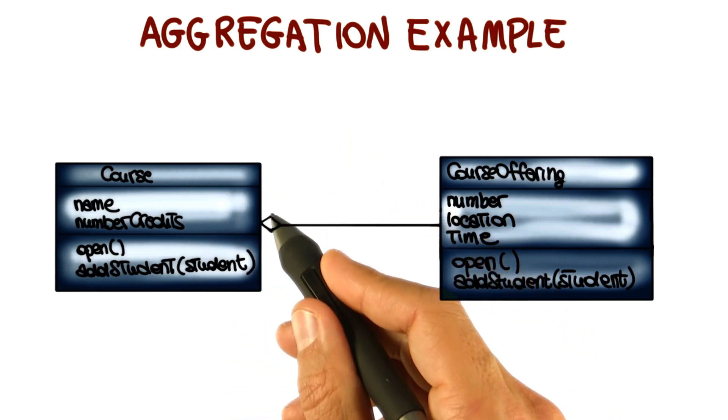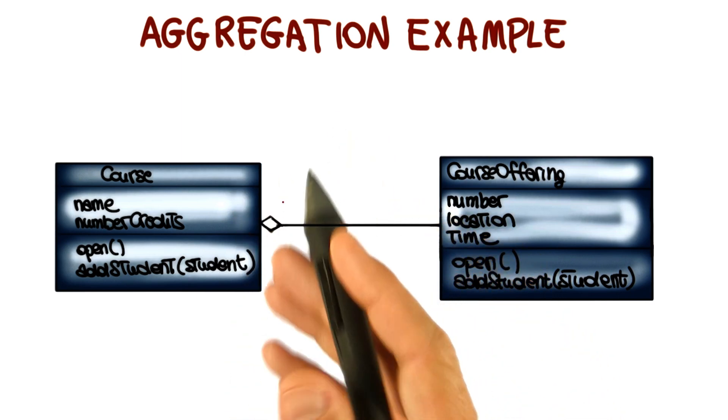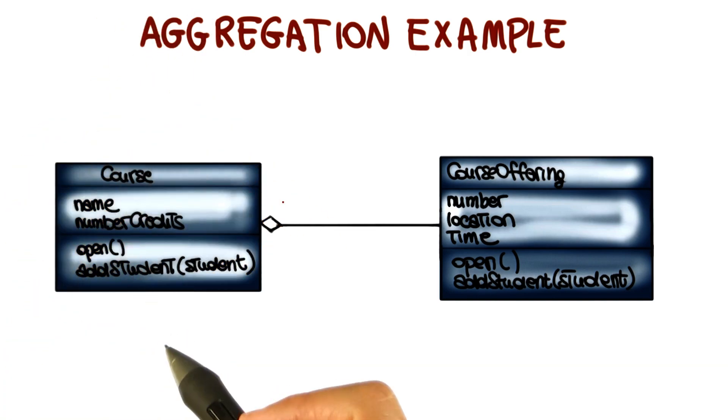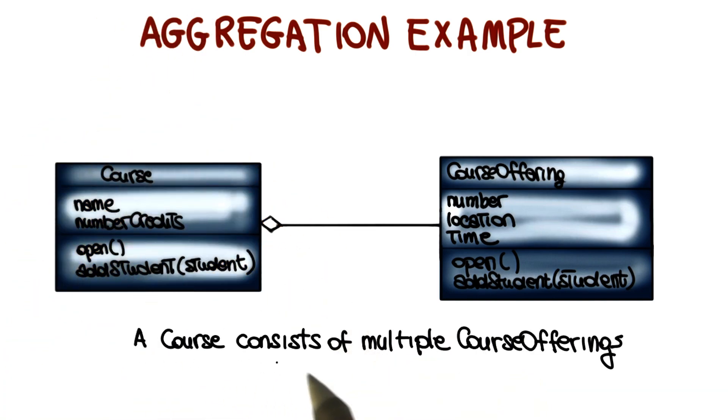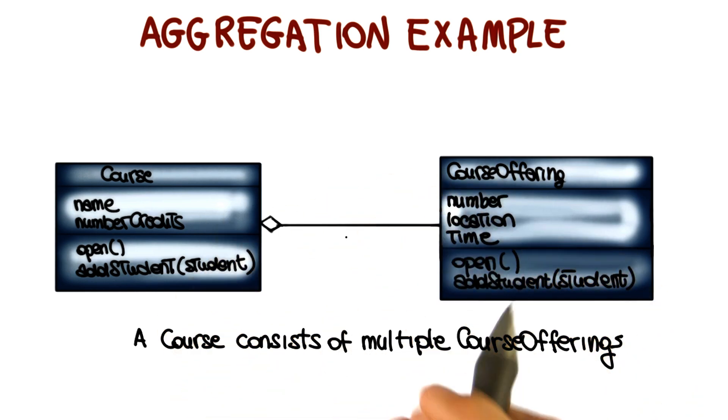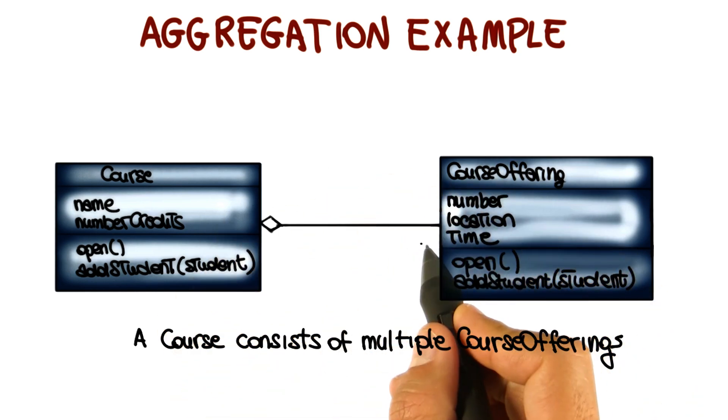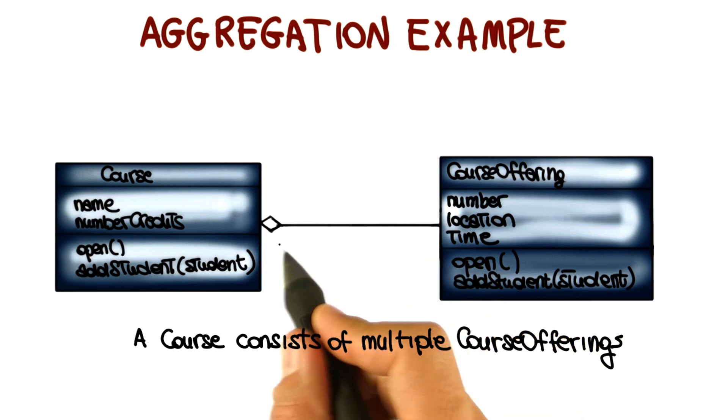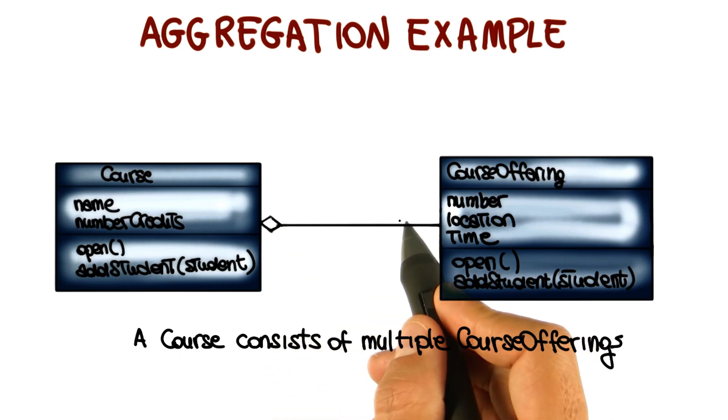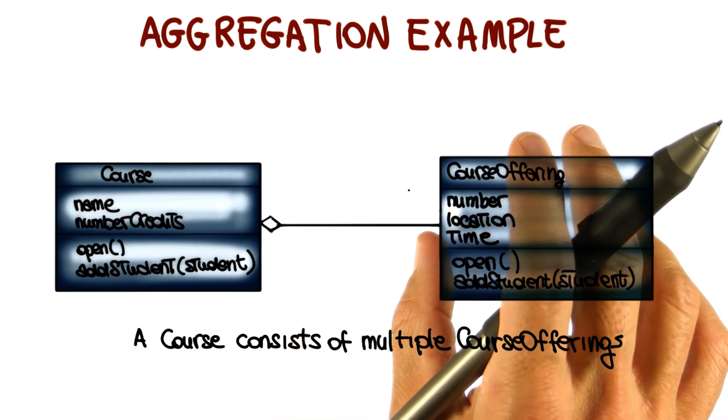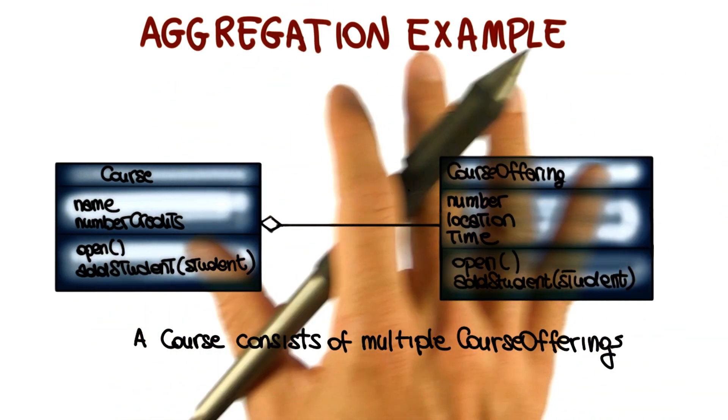So we will add a solid line with a diamond on the side of the whole class to indicate that the Course consists of multiple course offerings. And as we did for associations, even though we are not going to do it for this specific example, we could also in this case add the multiplicity information on the aggregation to indicate how many classes of the two types are involved in the relationship.